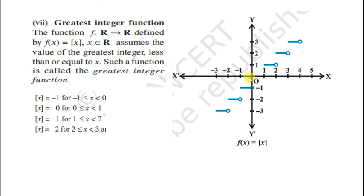Agar yeh iska graph hum draw karein, toh 0 aur 1 ke beech mein, toh 0 rahegi function ki value. 1 aur 2 ke beech mein, 1 rahegi, except at 2, 2 pe 2 hogi. Aur isi tarah se, 0 aur minus 1 ke beech mein, function ki value minus 1 rahegi hai, except at 0. Toh yahan humne blank circle bana hai. Toh yeh steps ki tarah humne dikha raha hai, isliye isko step function bhi kaha jata hai.